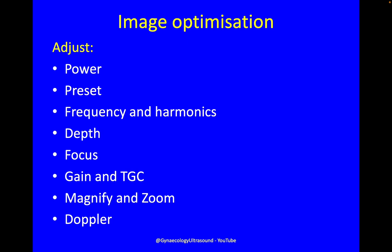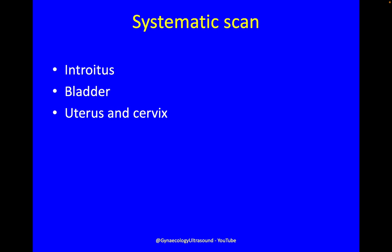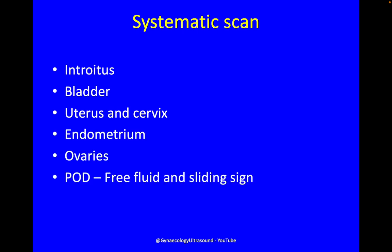Image optimisation — I'm not going to talk about this in detail, but these are all the different features that I would regularly change. A systematic scan starts by looking at the introitus, then the bladder, uterus and cervix, the endometrium, the ovaries, and the pouch of Douglas for free fluid and the sliding sign, which should now be part of a routine scan. Then mobility and tenderness, and if you're more advanced, also looking at the posterior compartment.